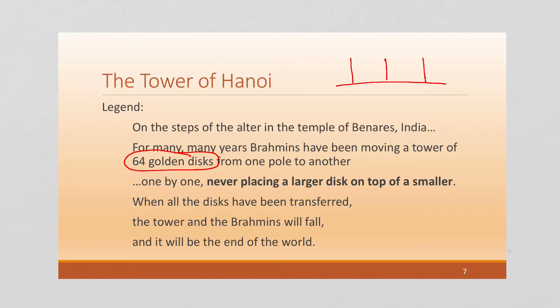There's three poles and we have a tower made up of discs of decreasing size and the idea is they've been trying to move them all from one pole to the next. When all the discs have been transferred the tower and the Brahmins will fall and it will be the end of the world. So again this is a made-up legend by the French mathematician who started this whole puzzle whose name is Edouard Lucas.